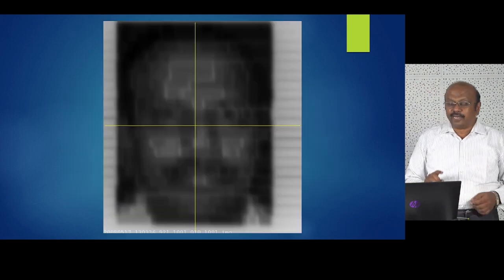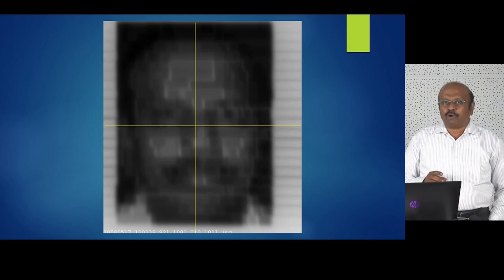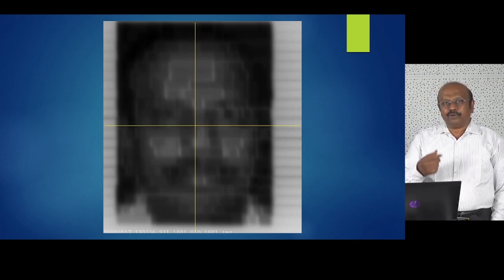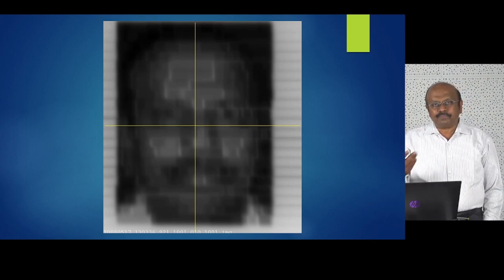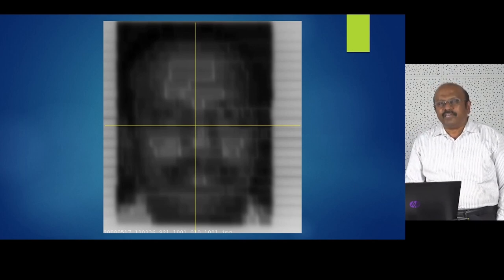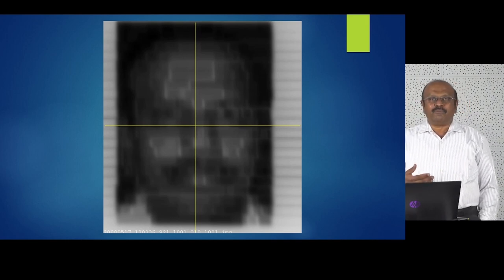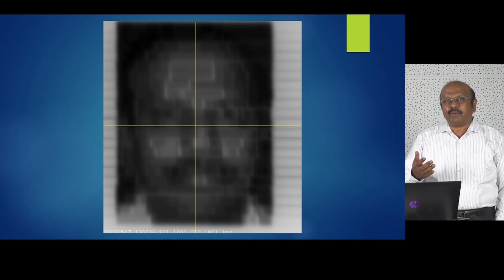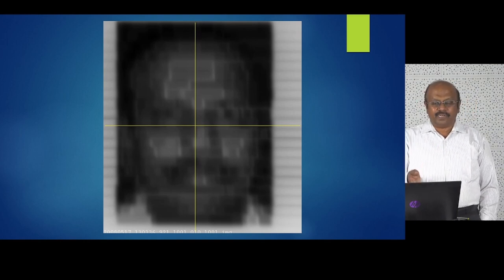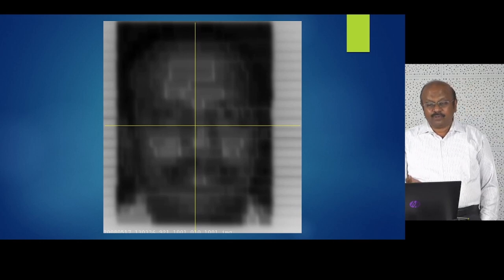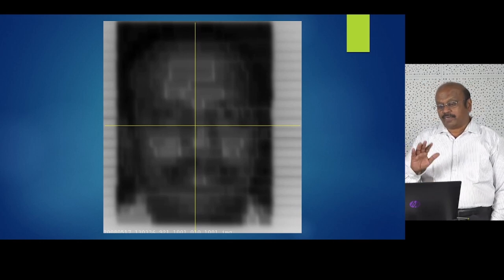Before discussing the sliding window, I'd like to mention that in 2006 or 2007, one of my students developed software using this 2^N formula for leaf sequencing to deliver a fluence map. What she did was take my photograph, convert it into a fluence map, and do the leaf sequence. We delivered it — it was a 1 cm leaf MLC so you don't really see it very clearly, but that is me.